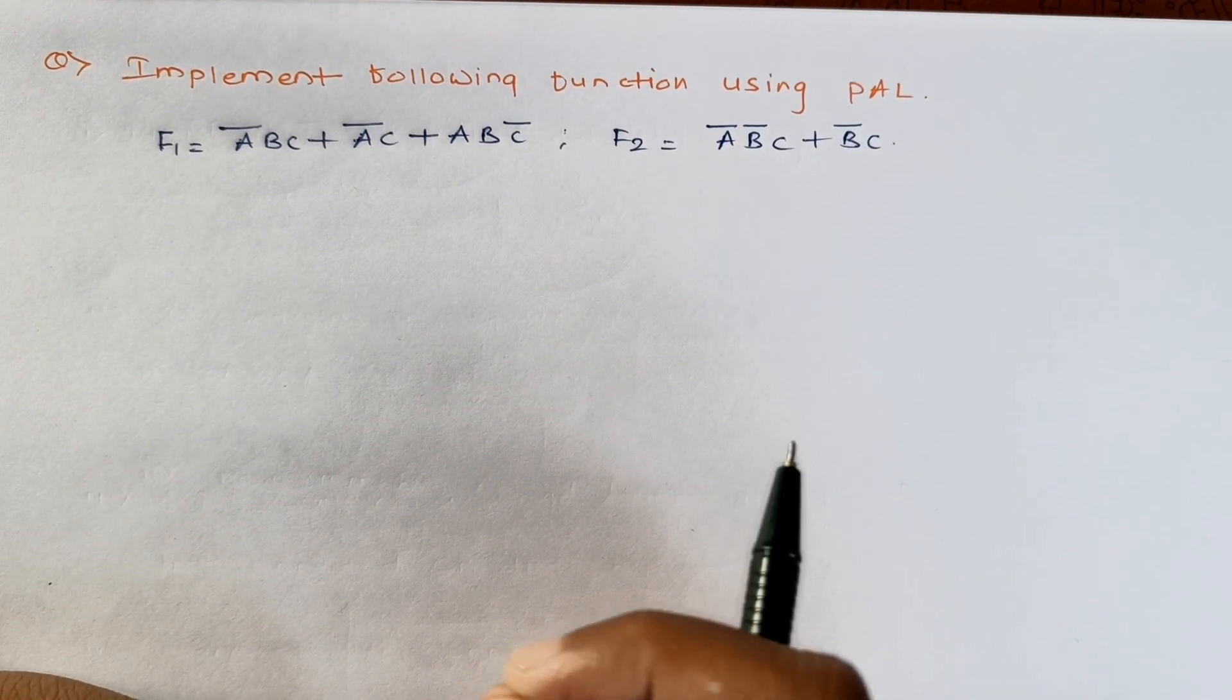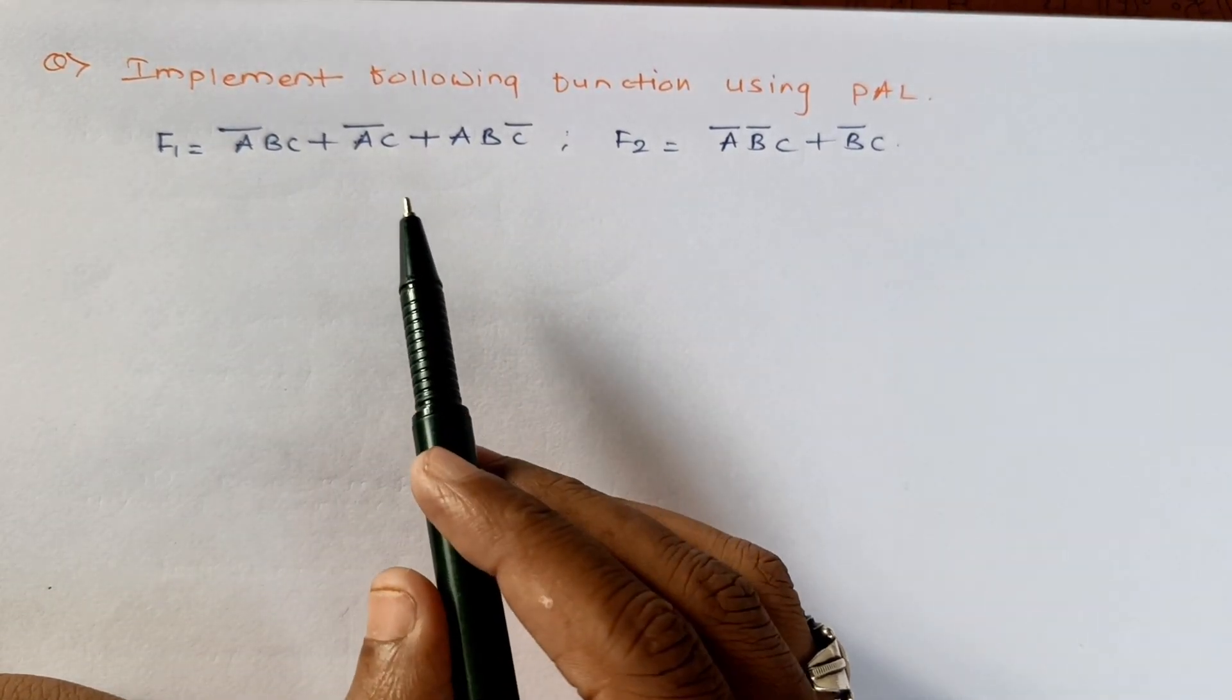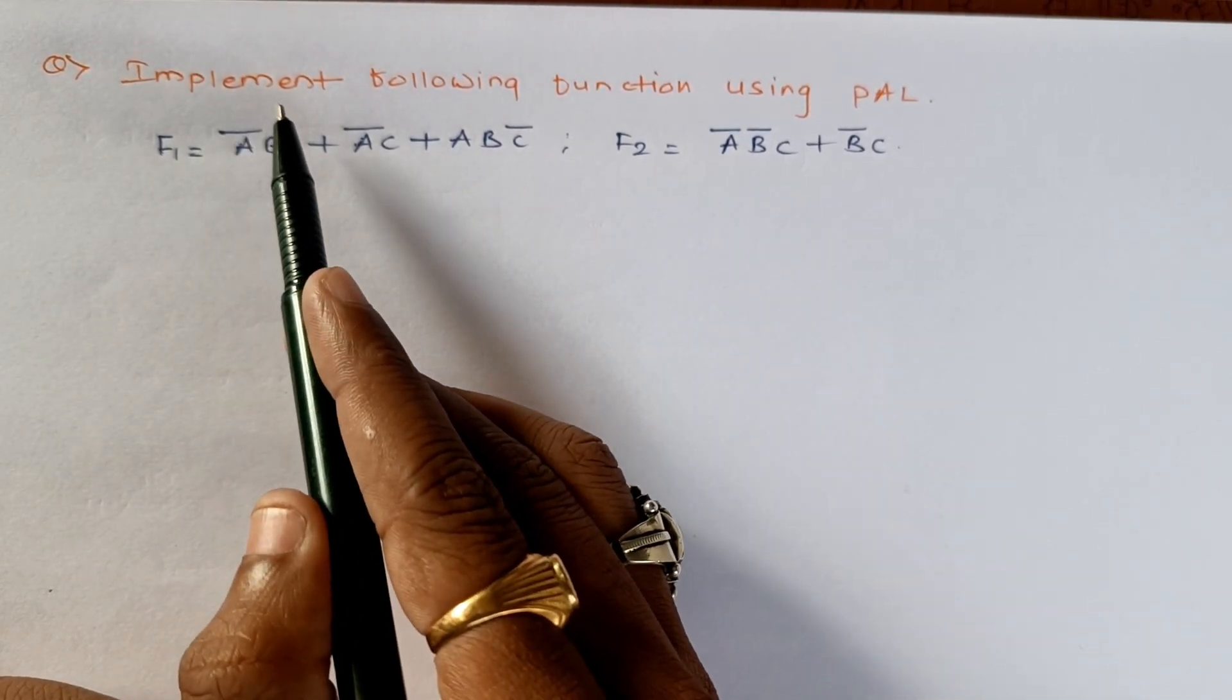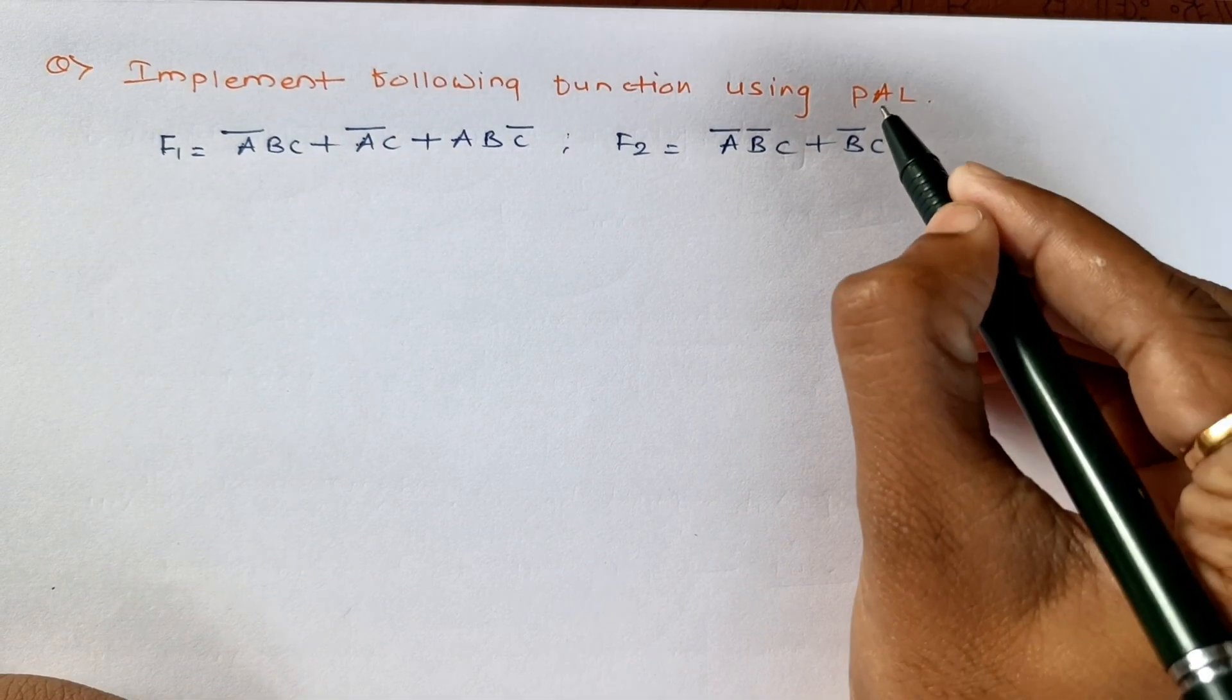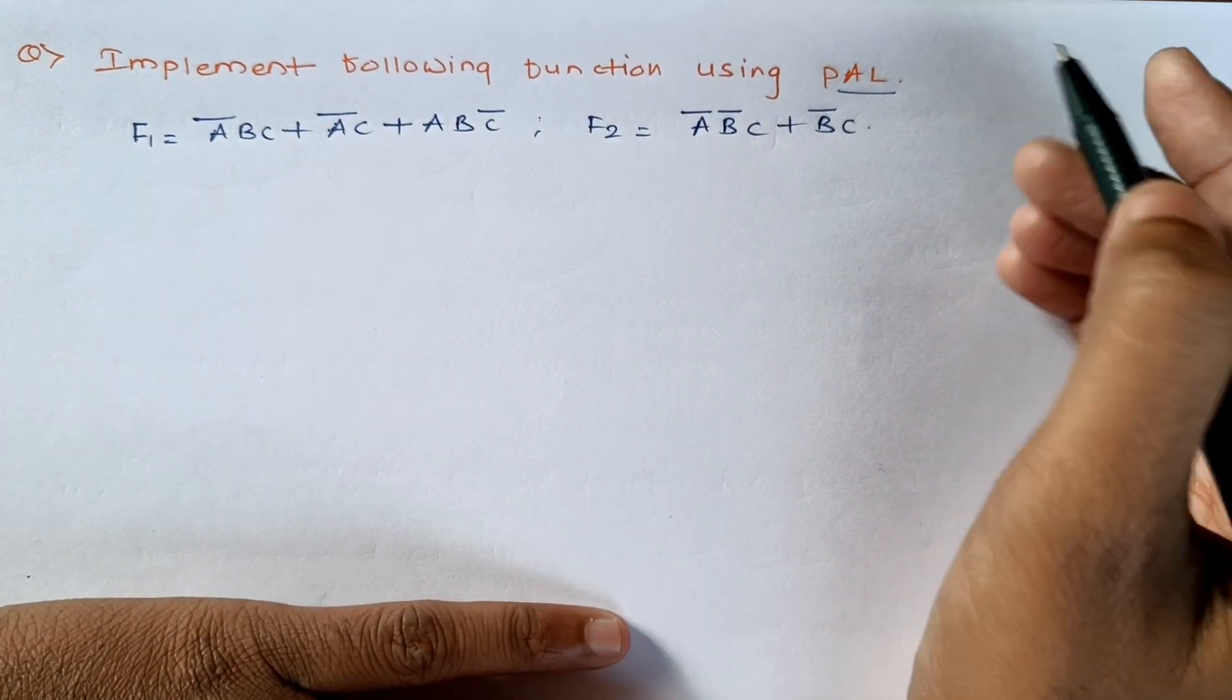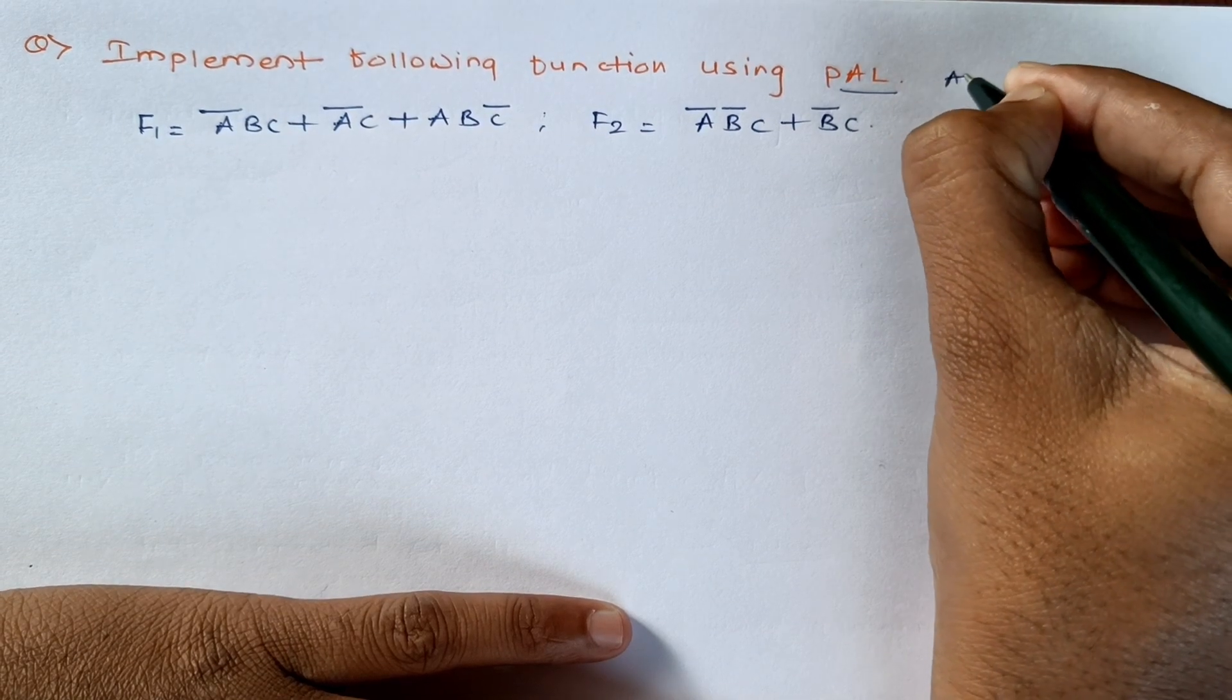Hello everyone, now in this video we will see how to implement functions using PLDs. The first question is: implement the following function using programmable array logic. In case of programmable array logic, we have seen that the AND gate is programmable whereas the OR gate will be fixed.